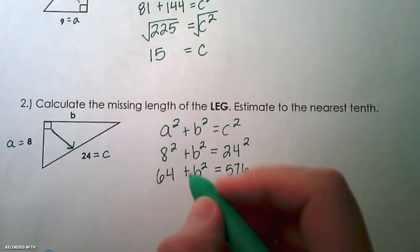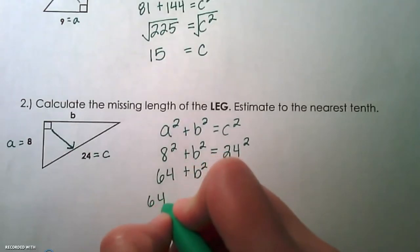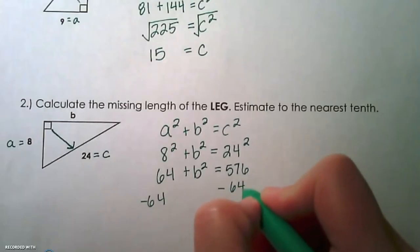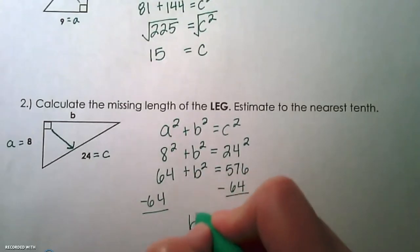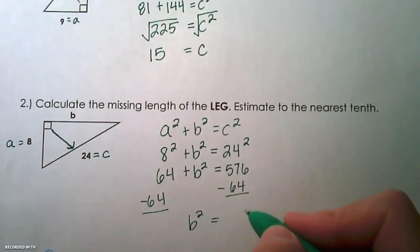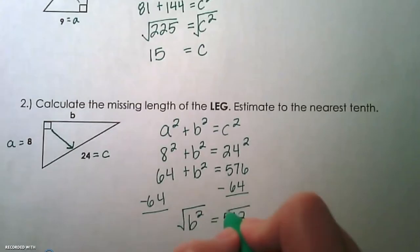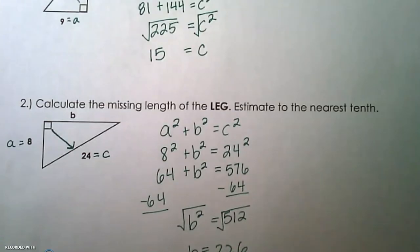Now we're going to use inverse operations to isolate b squared, so let's subtract 64 from both sides of the equation. So we are going to get that b squared is equal to 512. And then finally, we take the square root of both sides of the equation, and we are going to get that b is equal to 22.6.